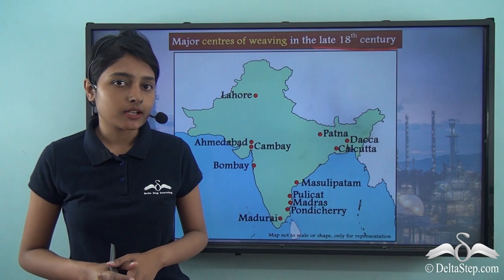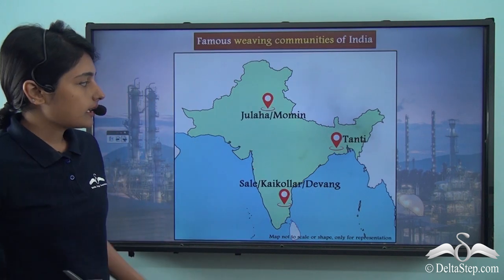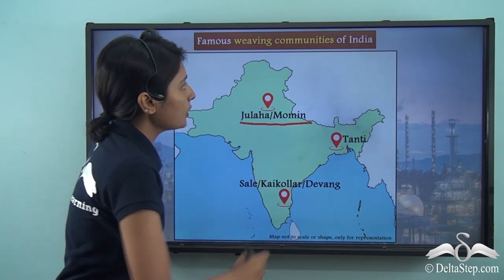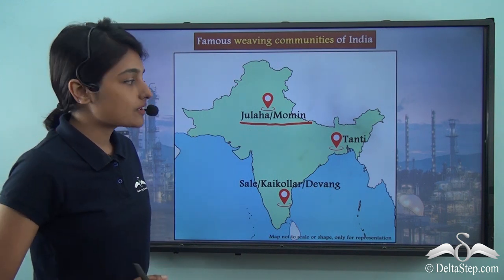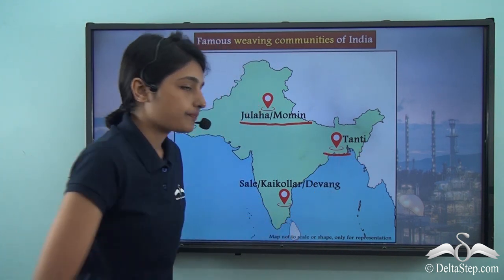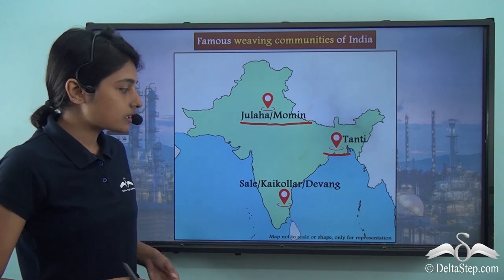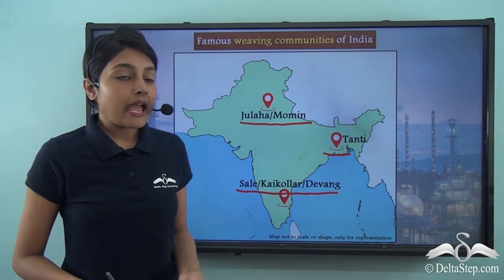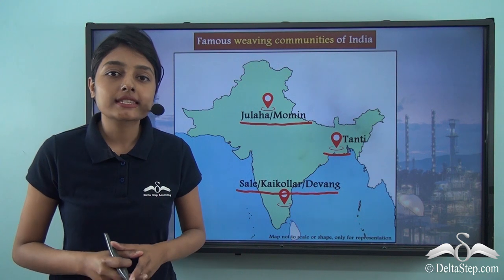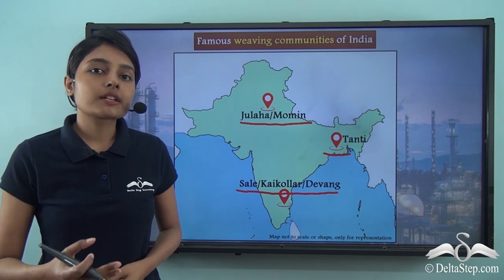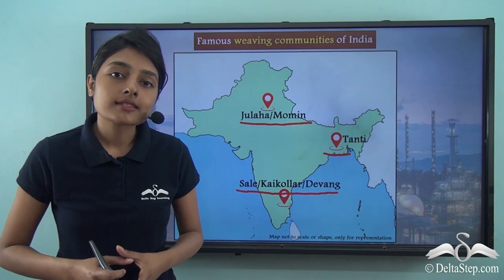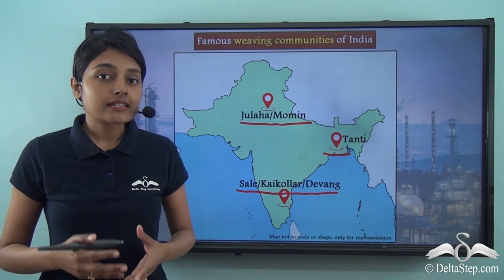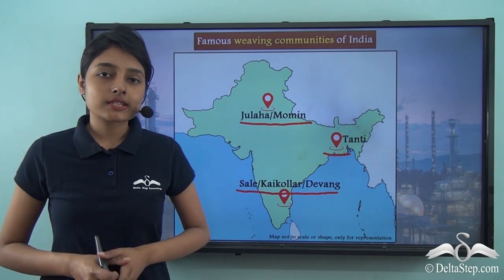Let us learn about those now. In the northern and central parts the weavers were called Julaha or Momin, and in Bengal the weavers were called Tanti. In the southern part of the Indian subcontinent we had the Sal, Kaikollar or Devang, and these were the major weaving communities that gained popularity simply because of the cloths they produced. These weaving communities used to produce different kinds of textiles, and they were also called by different names.